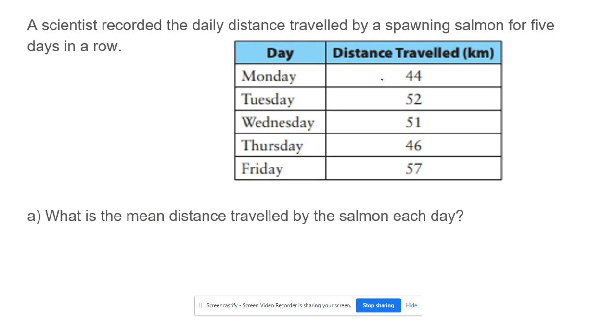Next problem: A scientist recorded the daily distance traveled by a spawning salmon for five days. The mean is: 44 + 52 + 51 + 46 + 57 = 250 kilometers. So 250 divided by 5 equals 50 kilometers per day.